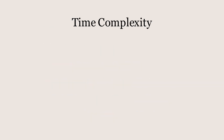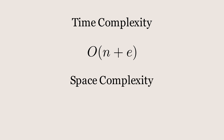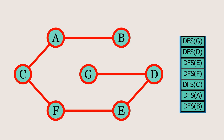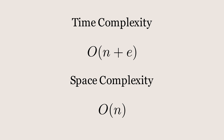The time complexity of this DFS algorithm is O(N + E), where N is the number of nodes and E is the number of edges. This complexity arises because the algorithm visits each node once and, for each node, checks all its connected edges, accounting for both nodes and edges in the overall complexity. The space complexity is O(N), due to the recursive call stack which, in the worst case, can go as deep as the number of nodes if the graph is skewed like a single path. Additionally, the visited set also requires O(N) space to store each node once as it's visited.